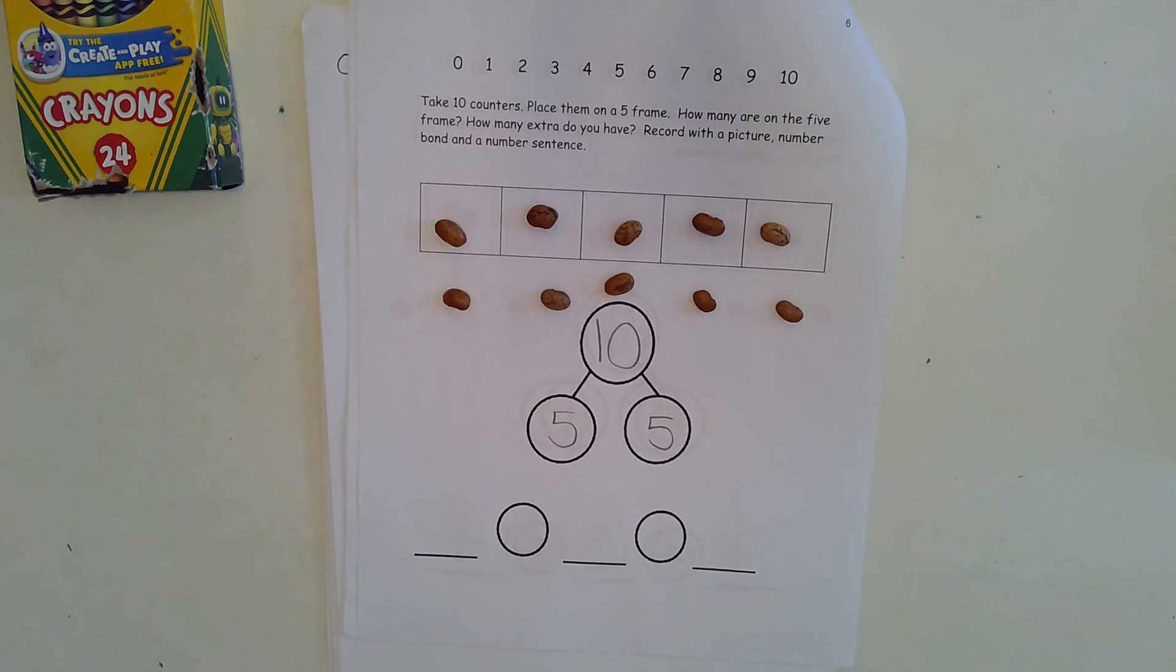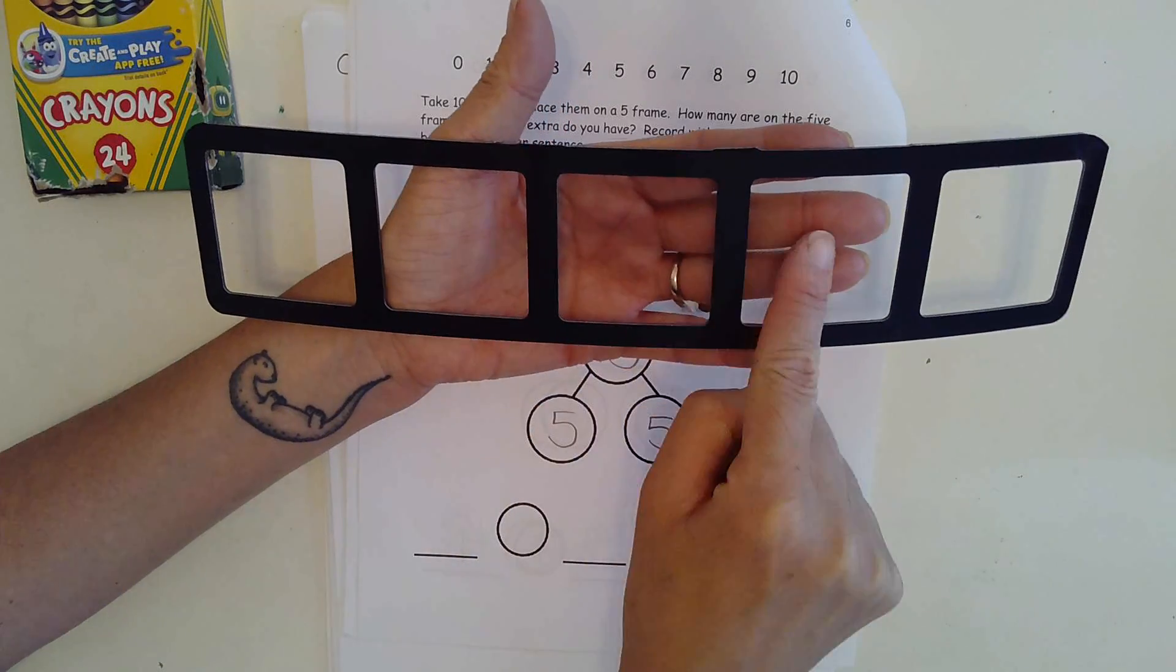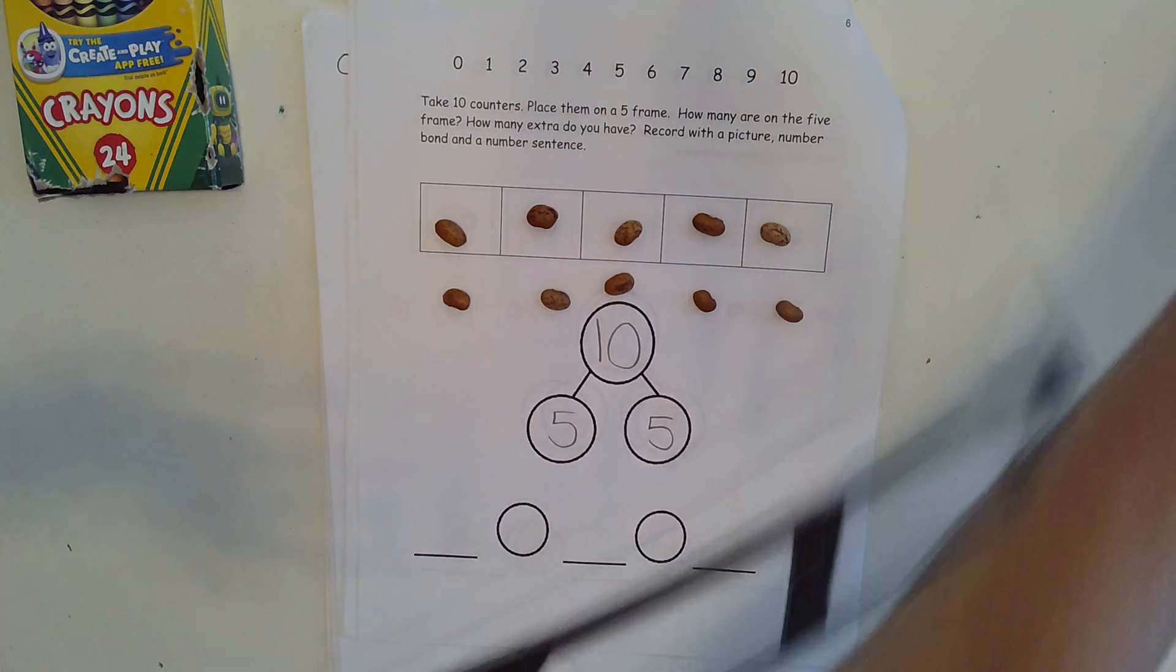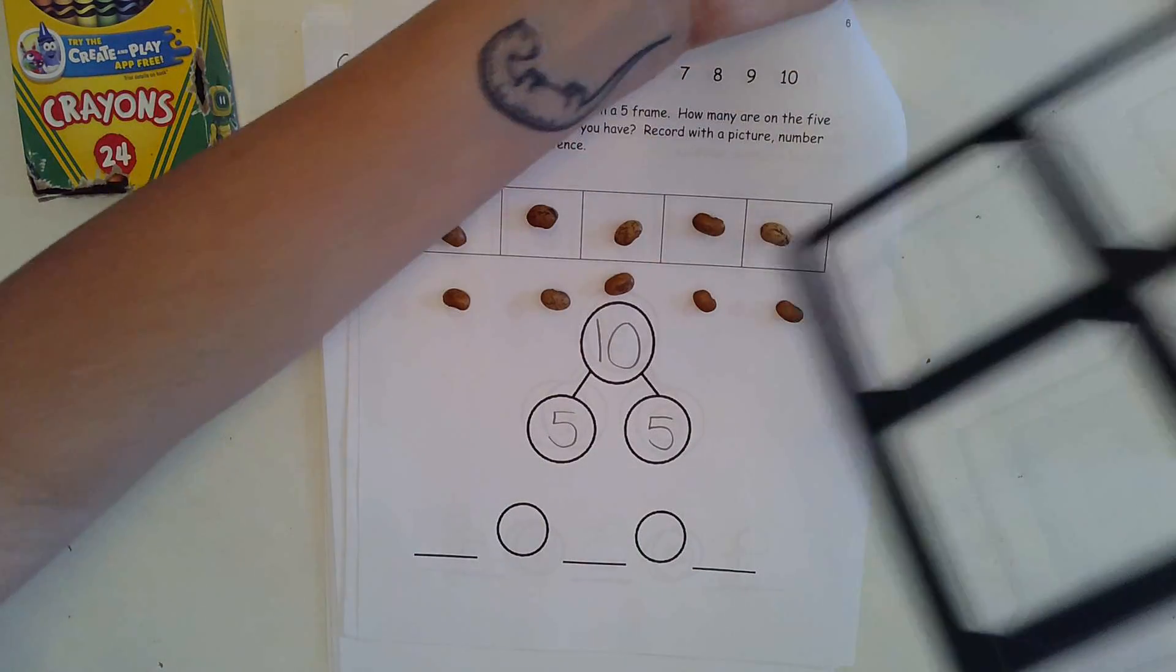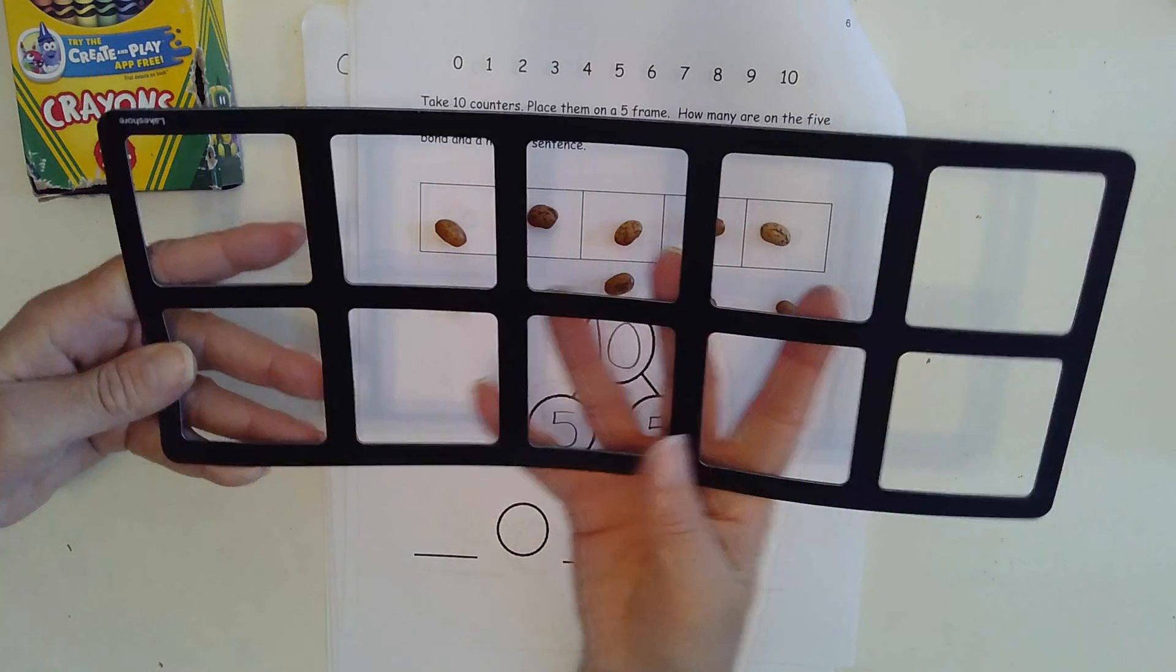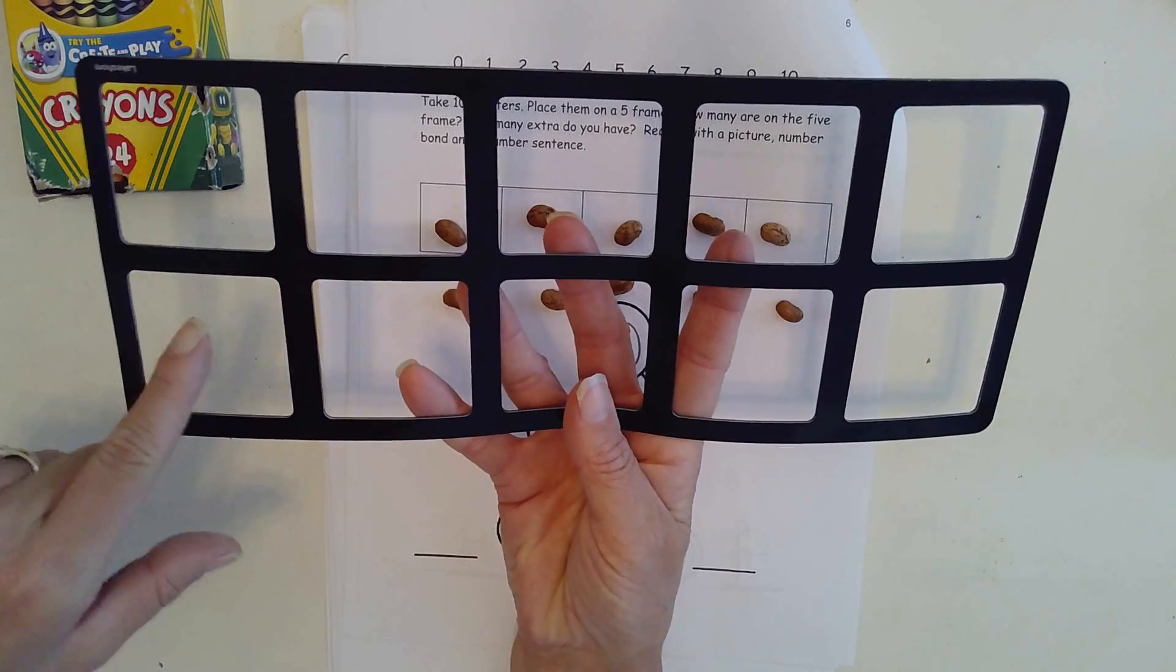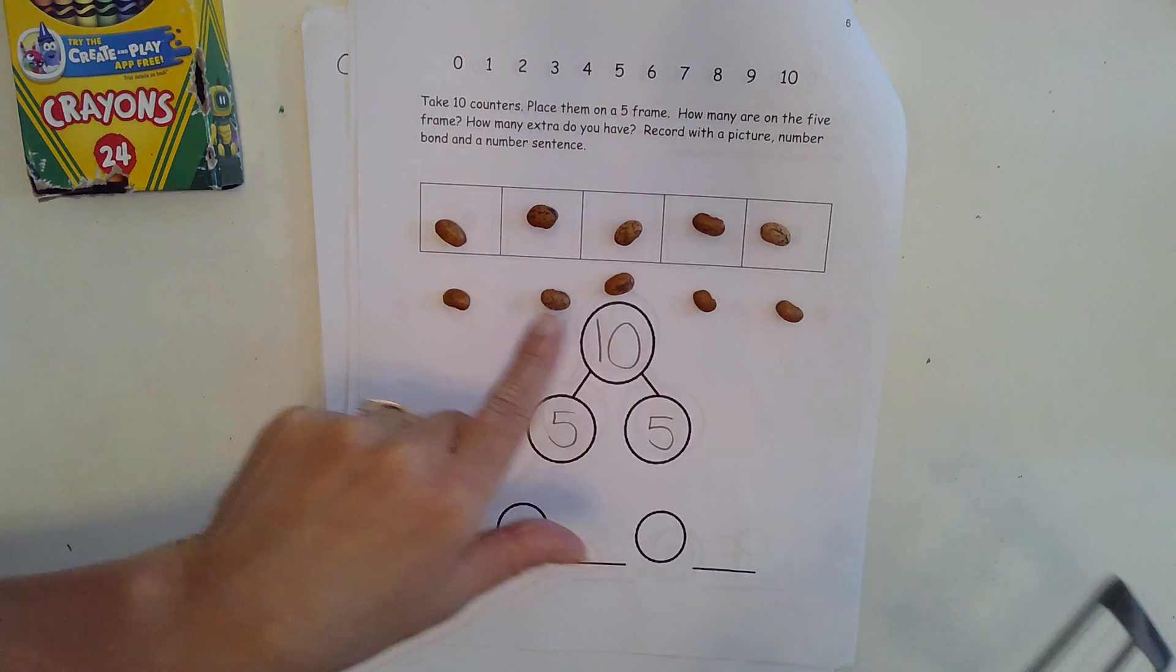You can look at a five frame here with one, two, three, four, five. And if we put two five frames together, we have what we call a ten frame. And it has one, two, three, four, five on the top and one, two, three, four, five on the bottom, just like we have here, making ten in all.